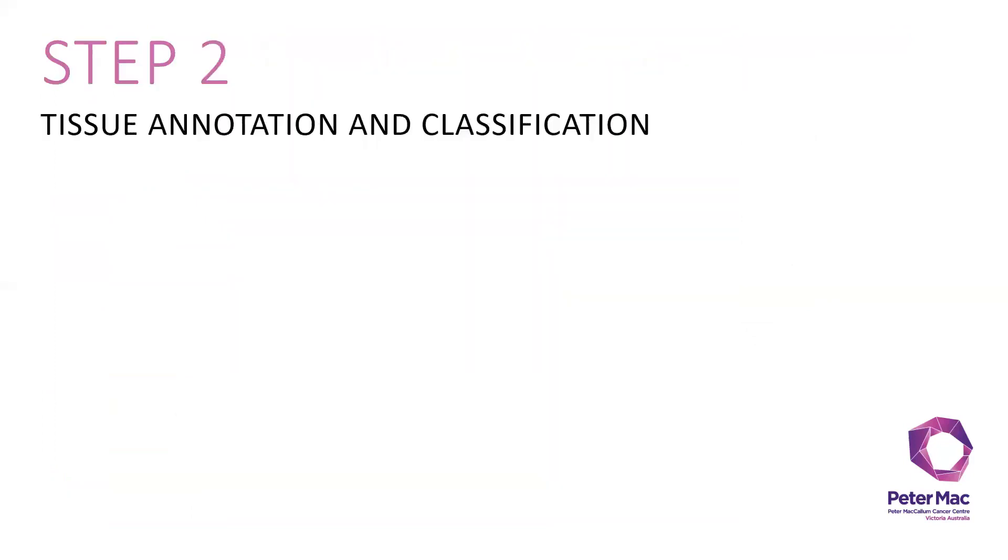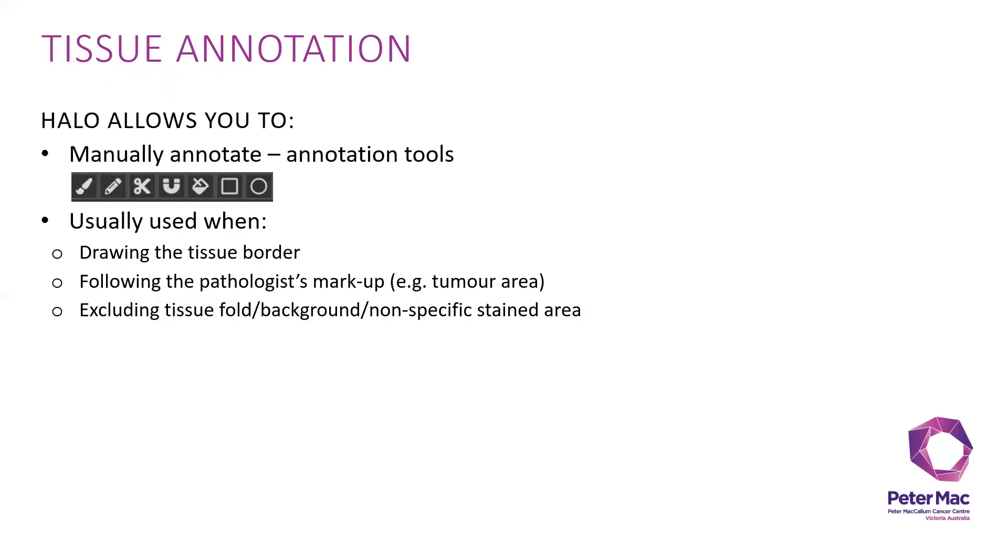After fusing, you move on to annotate the tissue and classify certain classes of your tissue. For tissue annotation, HALO allows you to do manual annotation using the annotation tools. It's usually used when you have to draw the tissue border to limit the space that you would like to analyze, to follow the pathologist markup, for example tumor area markup, to exclude tissue fold background or non-specific stain area.